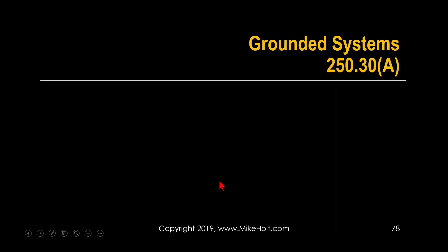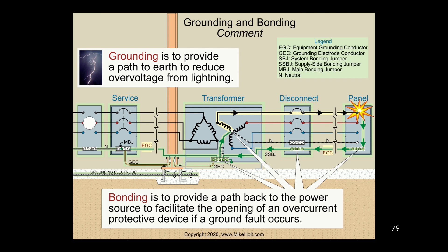Pretty much all transformers are separately derived systems. Let's take a transformer and follow the rules of 250.30. What are we trying to accomplish? Just like with services, we have to ground them and we have to bond them. So with separately derived systems, we take the secondary system and we're going to ground it.